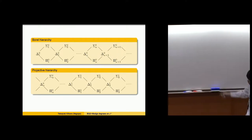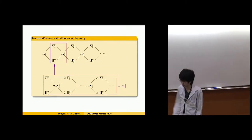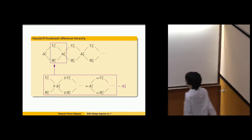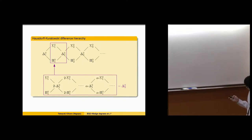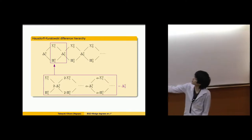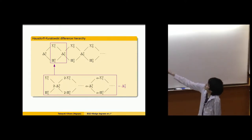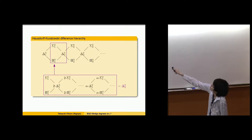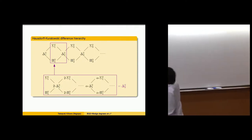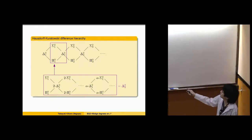It is unclear why we always have this kind of zigzag structure. The definition of the Borel and projective hierarchies may be somewhat artificial, giving rise to this zigzag. This structure is not the finest in some sense. For example, between sigma-0-1 and delta-0-2, we have the Hausdorff difference hierarchy, which is an intermediate structure of length omega-1.